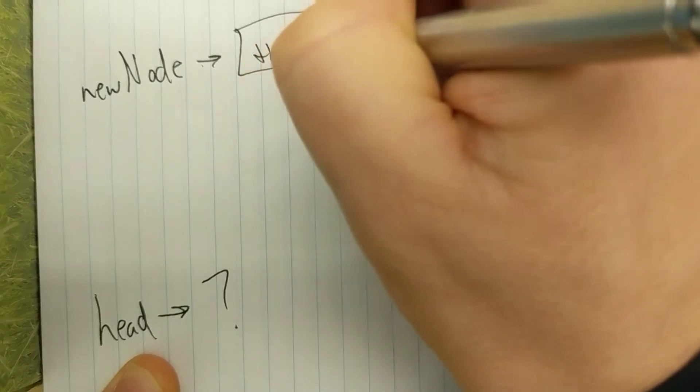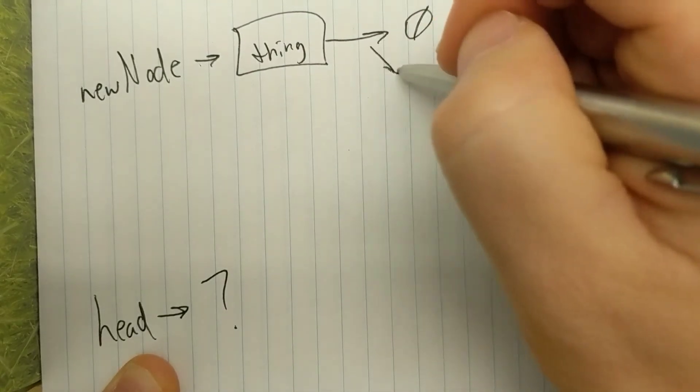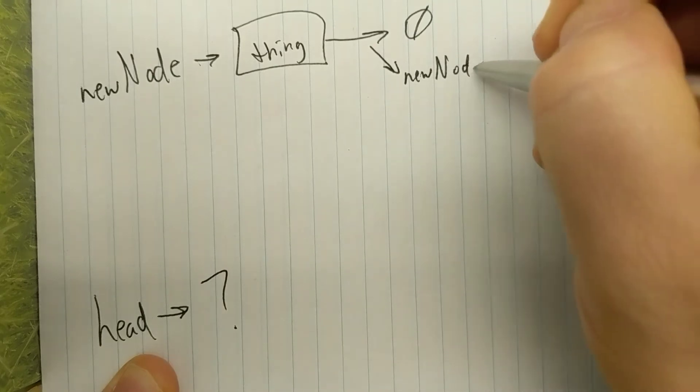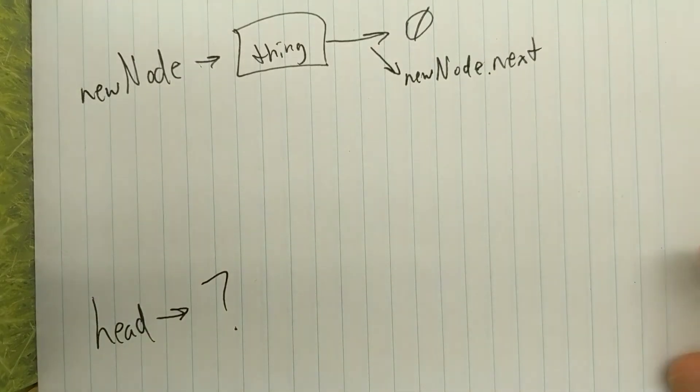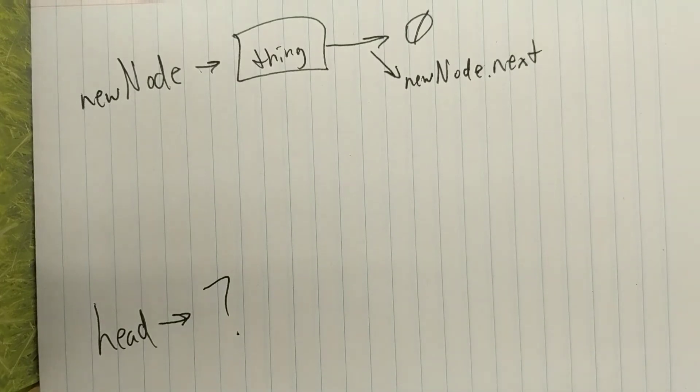If we want to add to the stack — we call this pushing — we might have a stack where head points to something. It could be null or a chain of nodes. Regardless, the process is the same: we create a new node. That new node points to null by default, since new node dot next is null. We construct that object and put a value in it, then we need to attach it to our stack.